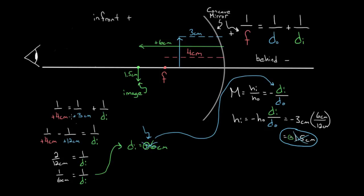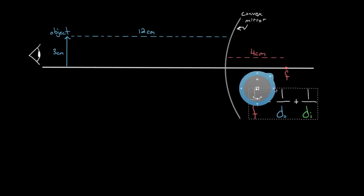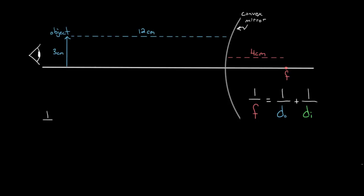Now what would happen if instead of a concave mirror, we used a convex mirror? Imagine our eye is over here looking at an object, and this time the mirror is convex — its focal length is behind the mirror. We use the same mirror equation: one over the focal length. With our sign convention, the focal length of a convex mirror is negative, so we plug in negative four centimeters. The object is still in front of the mirror at positive 12 centimeters, and we solve for the image distance.